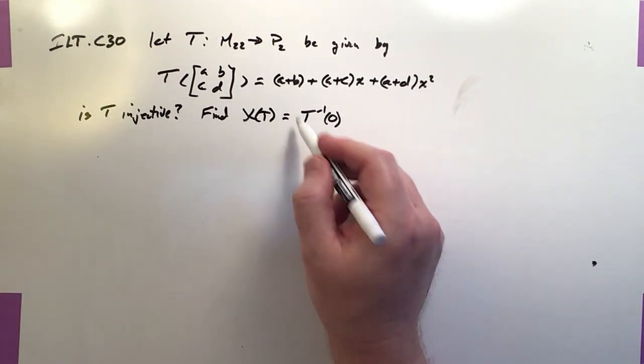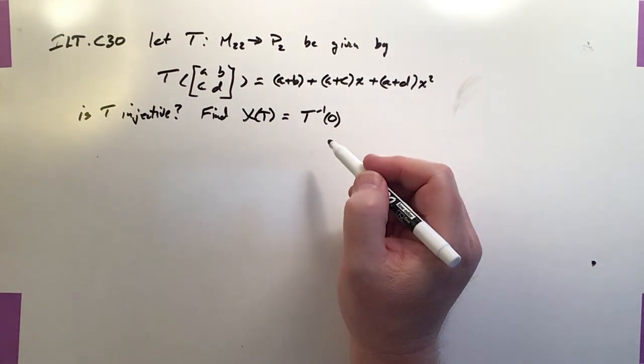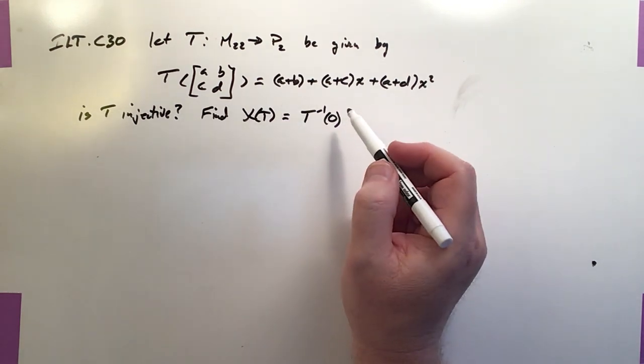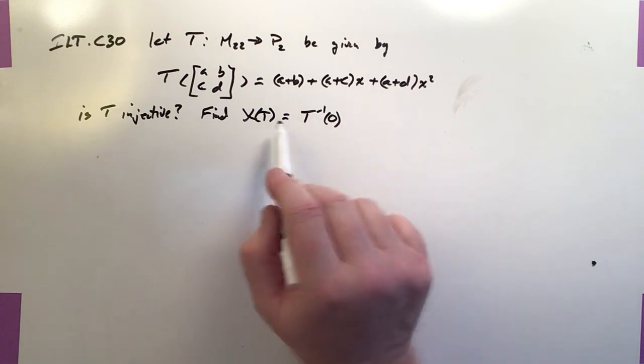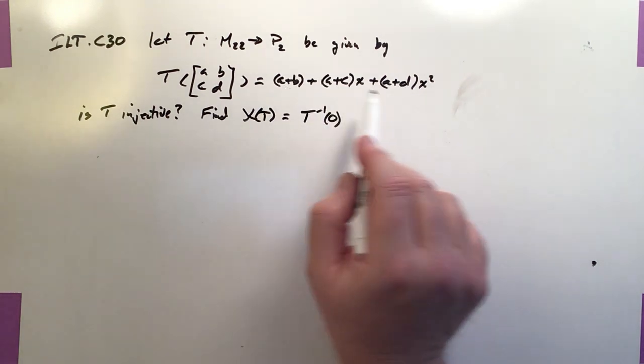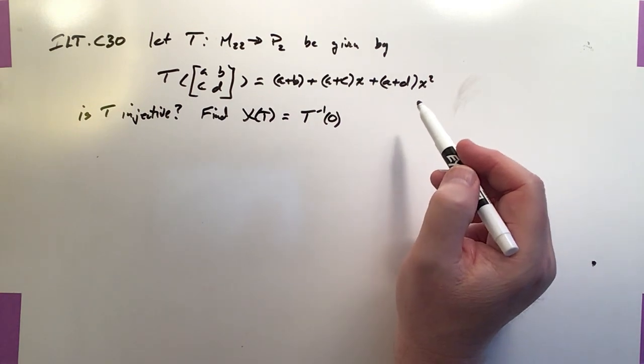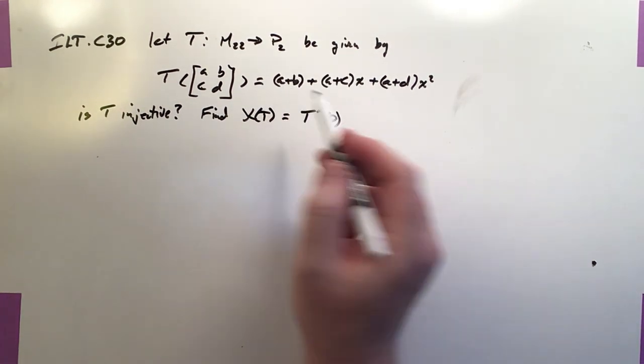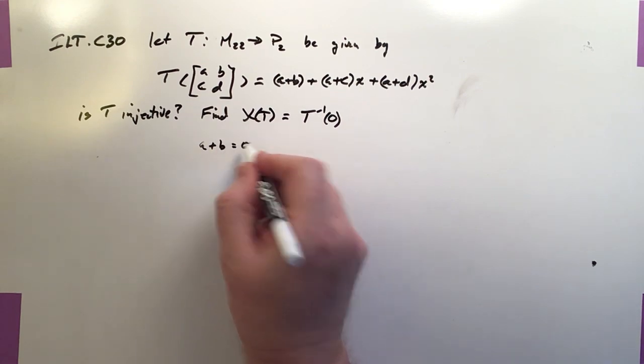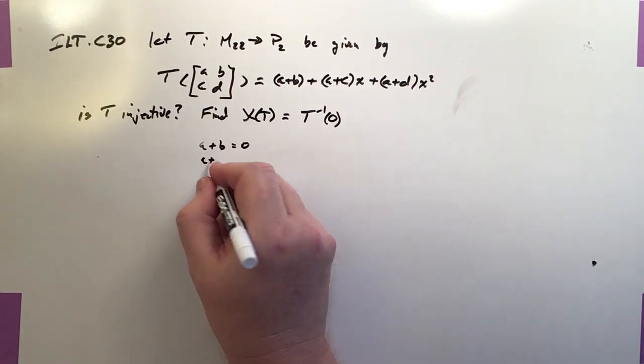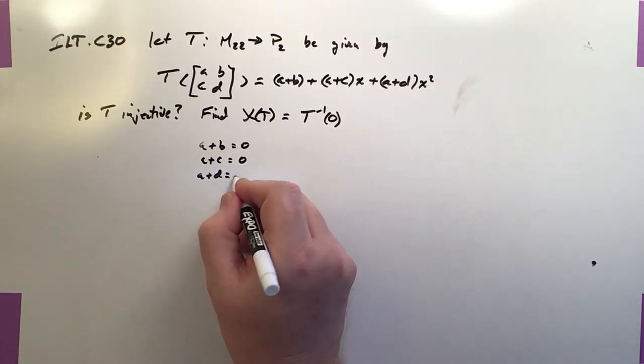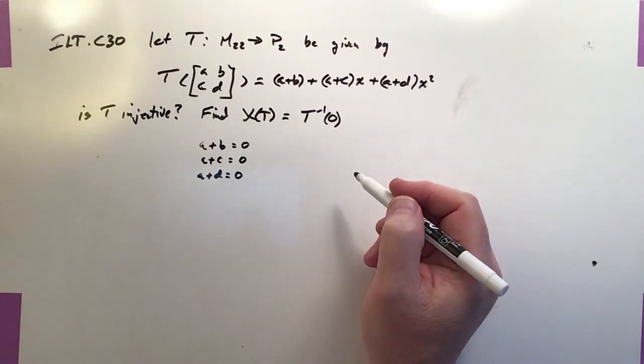Okay, so in essence, we want to solve this problem right here. So we've got to form a matrix which is equivalent to this guy's transformation, and that's pretty easy to do. It's going to be a three-row matrix, one row for the constant, one row for the linear, and one row for the quadratic polynomial. So our first row is going to be A plus B equals zero. Our next row is going to be A plus C equals zero. And our third row is going to be A plus D equals zero. So we want to turn that into a matrix.